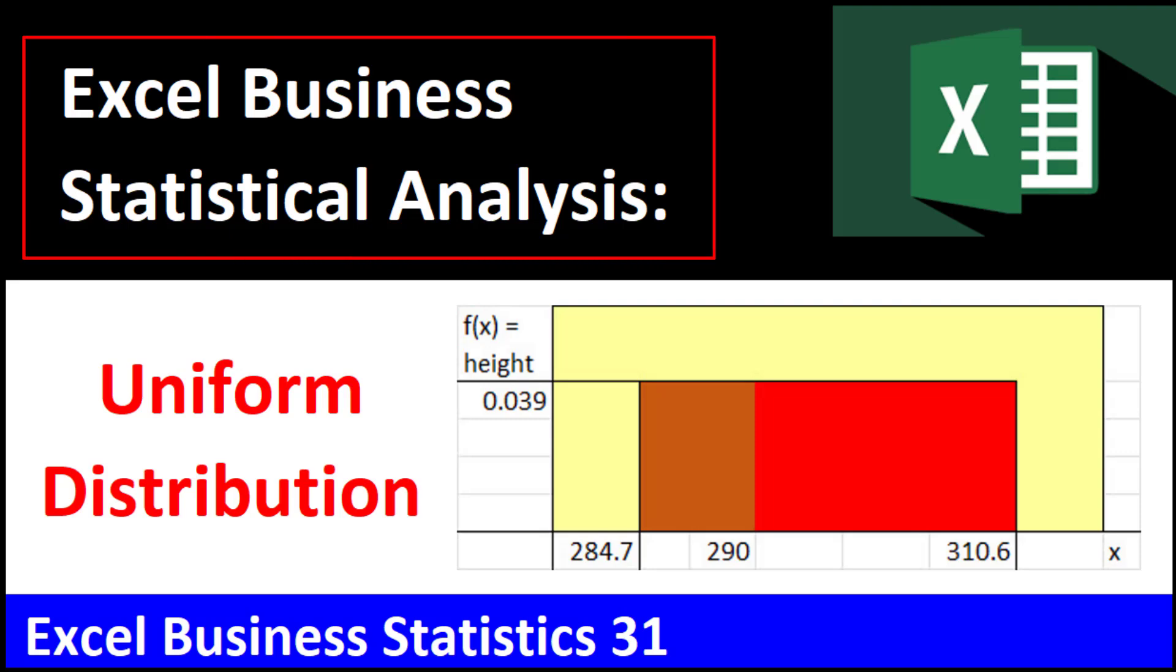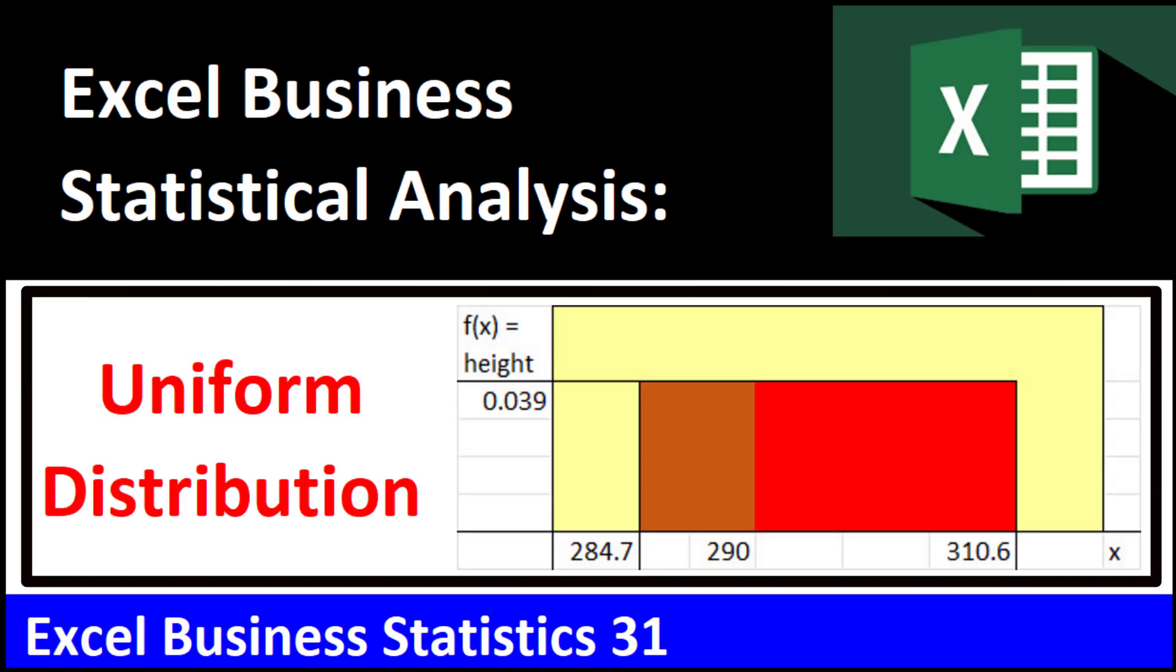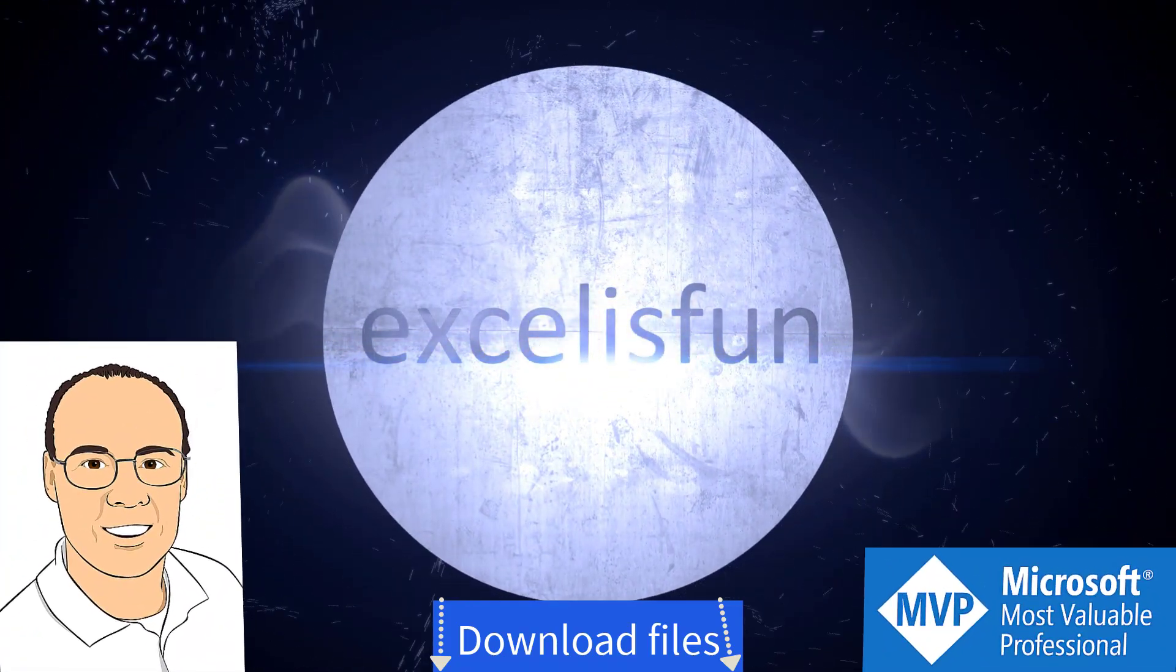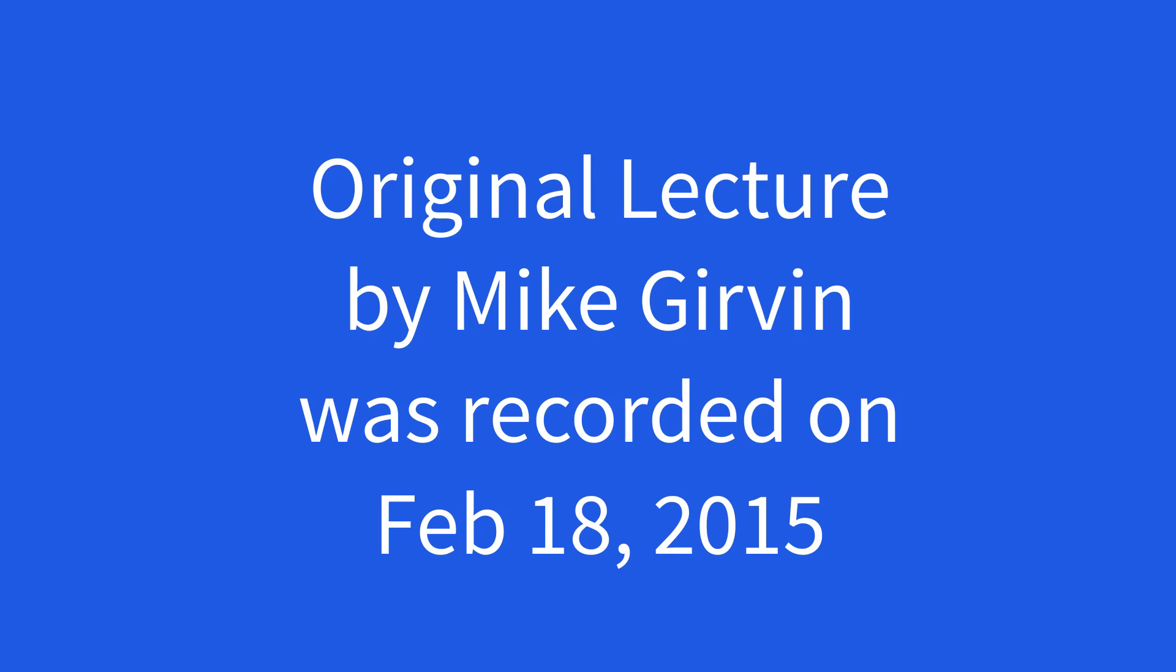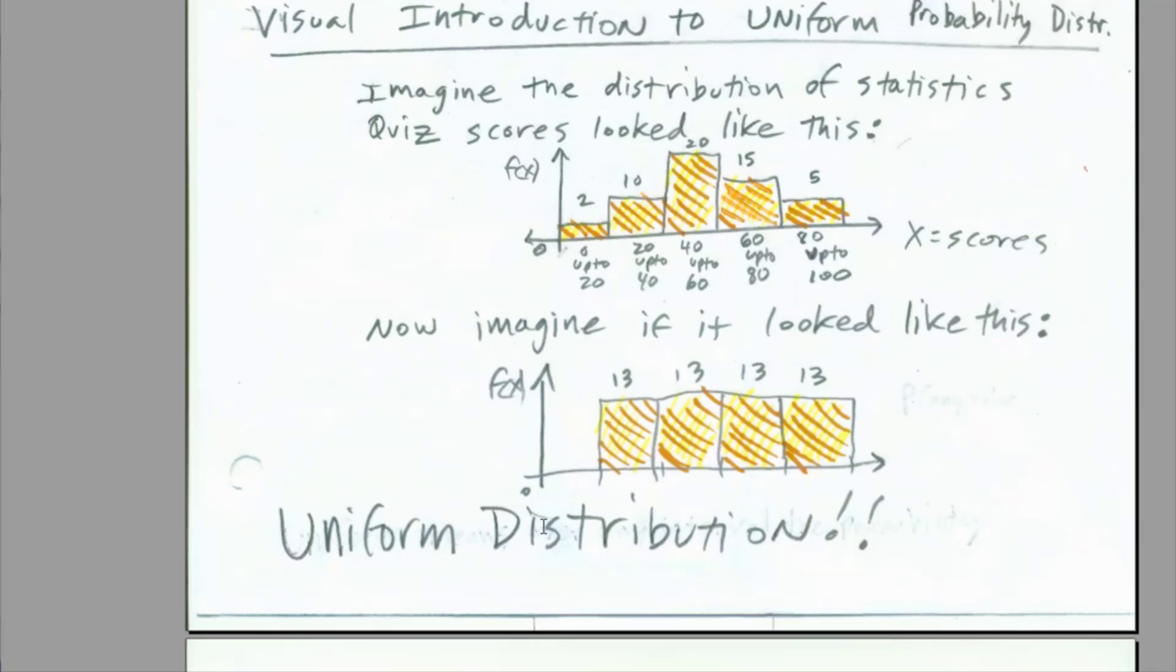Welcome to Excel Business Statistical Analysis, video number 31. In this video, we're going to talk about the continuous probability distribution, uniform distribution. We're talking about chapter 6, continuous probability distributions, and we want to talk about the uniform distribution.